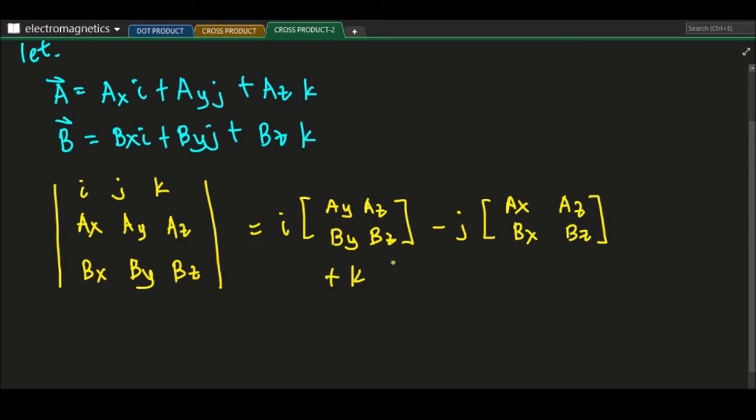Then plus k. So we just cover here and we will just have this two by two matrix here. So that will be A x, B x, A y, B y.